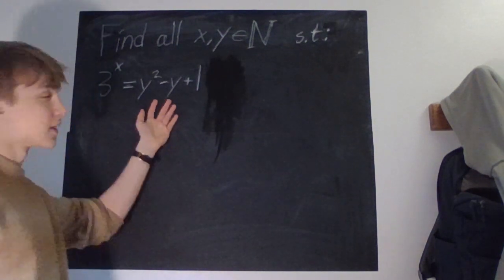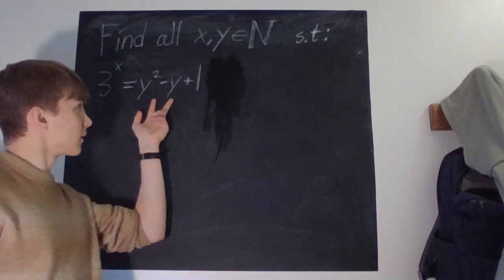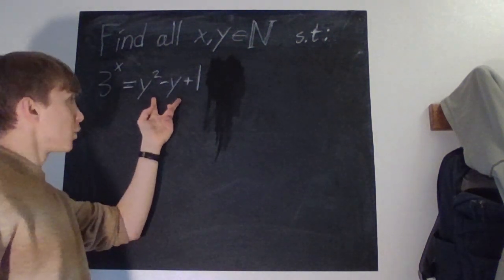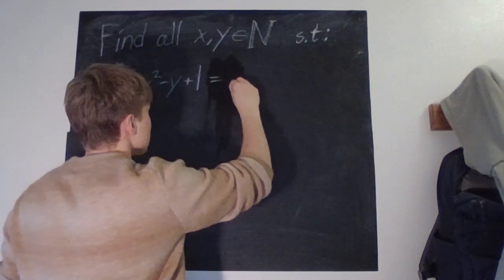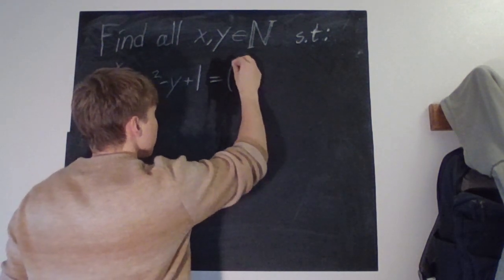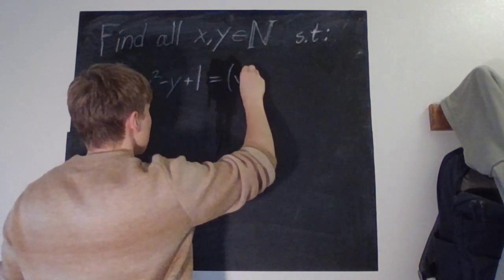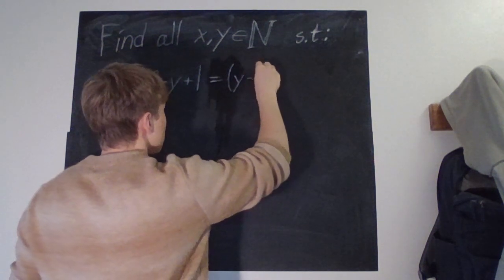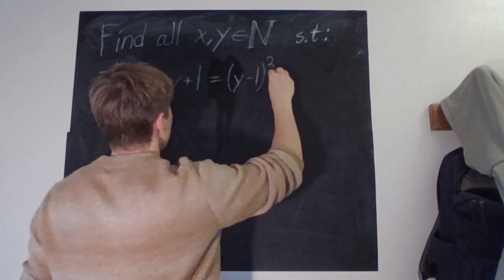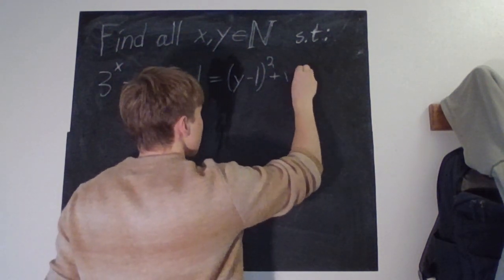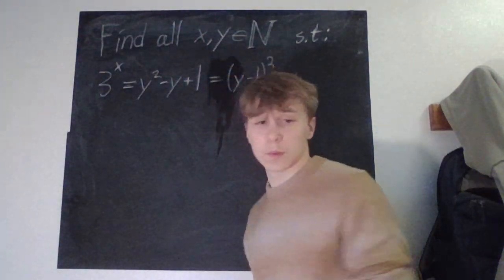So, what do you do with this? Well, you obviously complete the square. Since this is a polynomial which has no roots, the best thing we can do is write this as y minus 1 squared plus 1. Yes, that's our best shot.